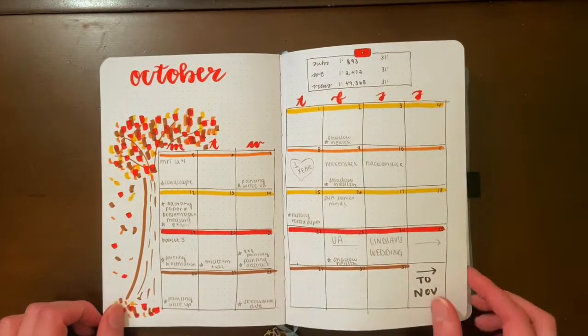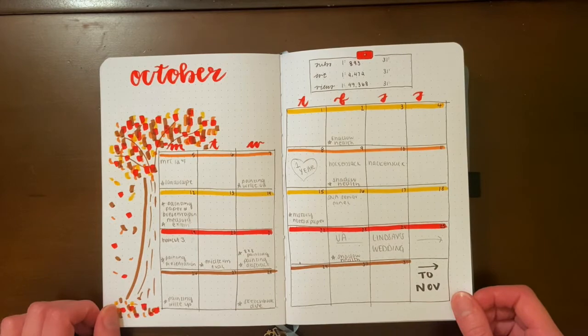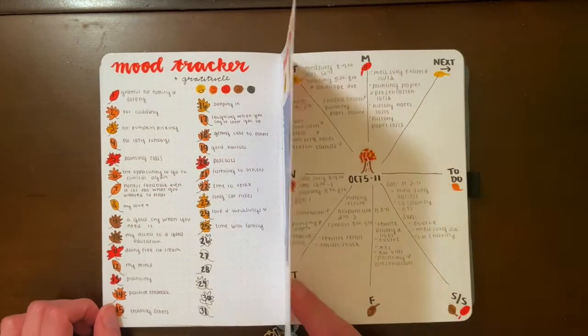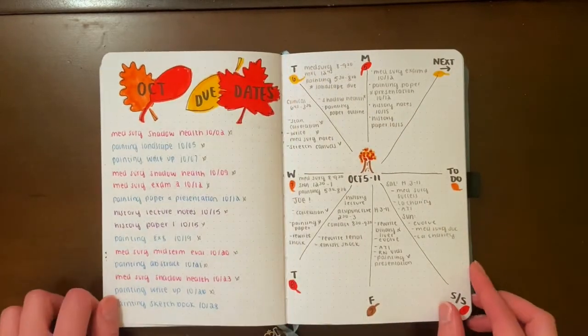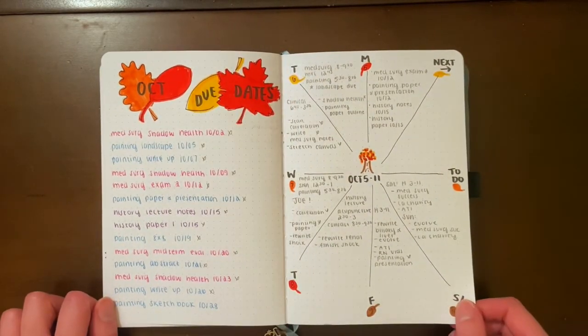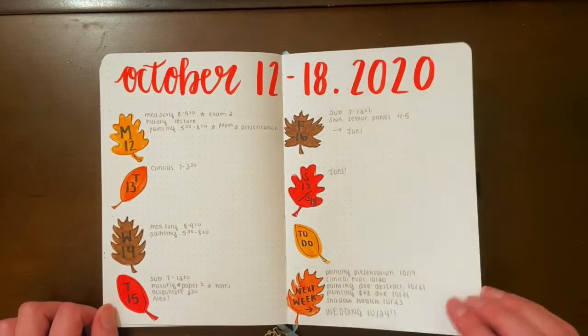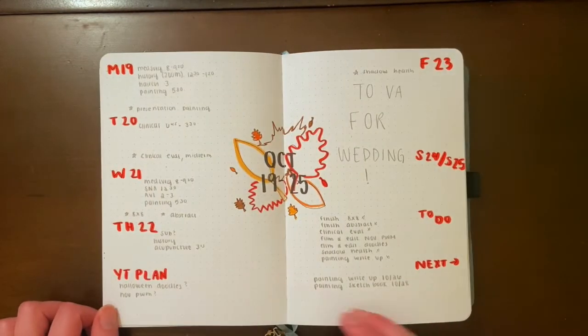First off, we're going to start with a little flip through of my October setup. I did a leaves theme for fall. It was really cute. I like how it turned out. It was pretty simple to keep up with. There were only a couple different shapes. If you have not checked that one out and you want to do leaves for November, I will link it and you can watch that video too.